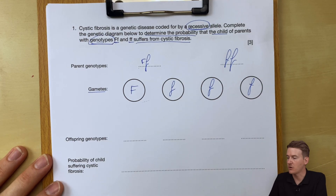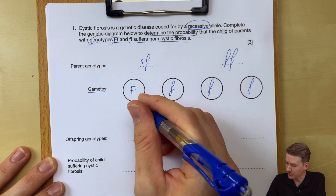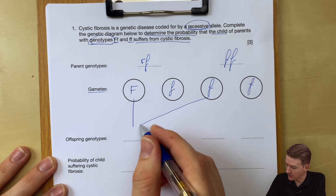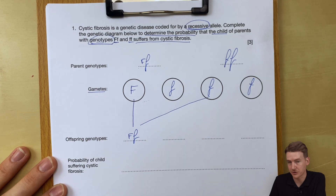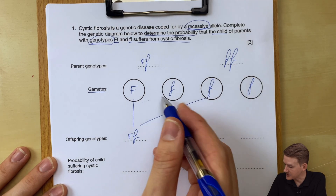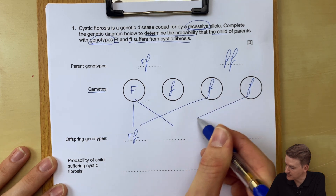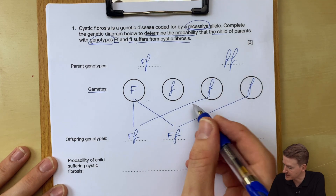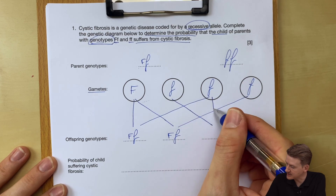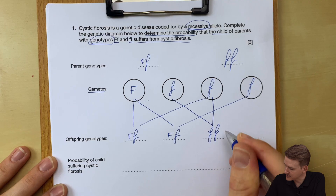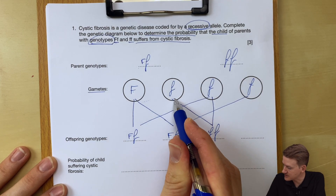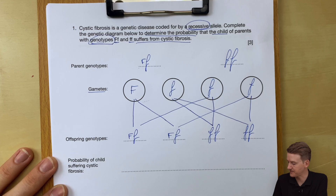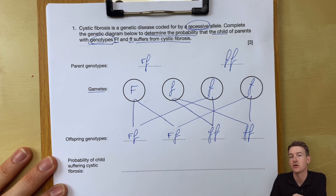Now let's look at what might happen through inheritance in the offspring. It's possible that this particular egg cell might get fertilized by this particular sperm cell — the offspring would be big F small f. It's also possible that this egg cell could be fertilized by this sperm cell, providing the same result: big F small f. It's possible that this egg cell could be fertilized by this sperm cell, giving small f small f. And it's also possible that this egg cell could be fertilized by this sperm cell — again, small f small f. So these are all of the different possible genotypes of the offspring.